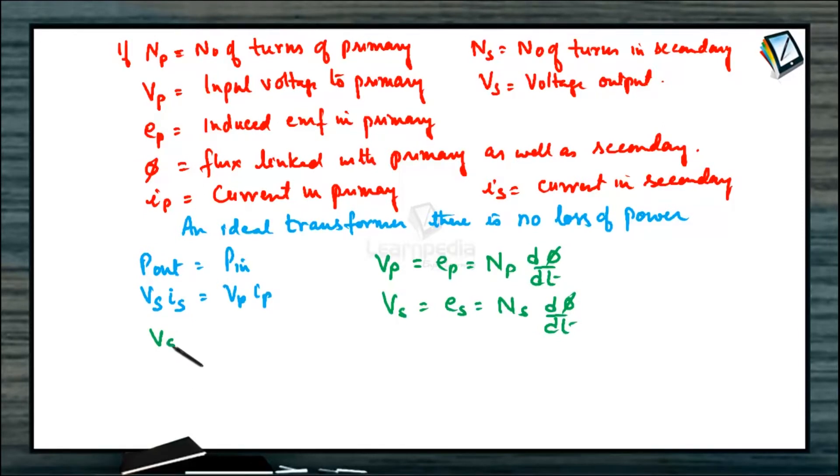So we can finally write Vs/Vp = Es/Ep = Ns/Np. And we know Vs/Vp can also be written as Ip/Is, the ratio of current in primary to current in secondary. This ratio is a constant called K, the transformer ratio, also called the turn ratio. Ns/Np = K.